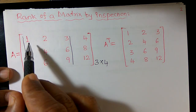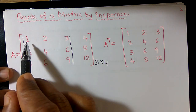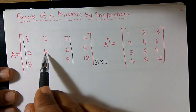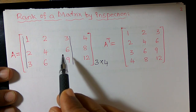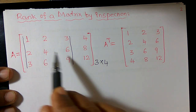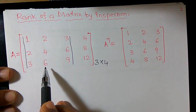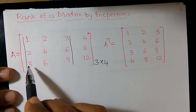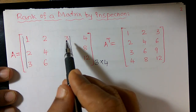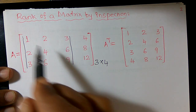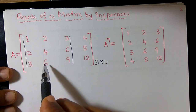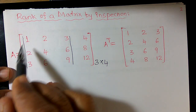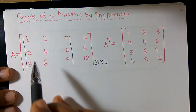Expanding: 1×(4×9 − 6×6) = 1×(36 − 36) = 0. Minus 2×(2×9 − 3×6) = −2×(18 − 18) = 0. Plus 3×(2×6 − 3×4) = 3×(12 − 12) = 0. So this minor of order 3 is 0. In a similar way, you can verify all possible minors of order 3 are equal to 0.